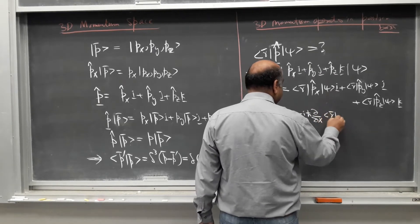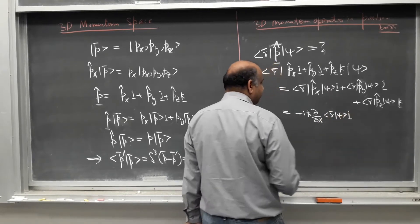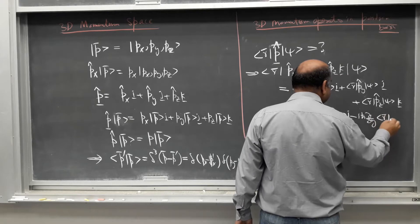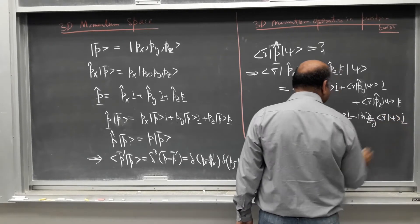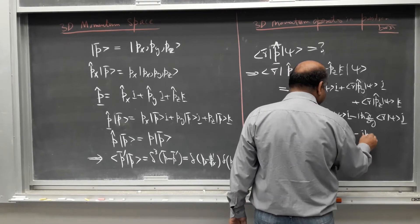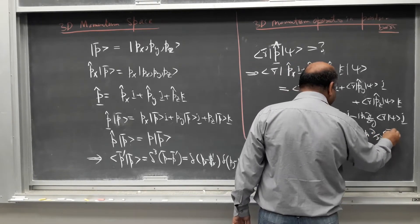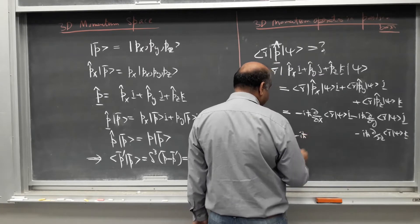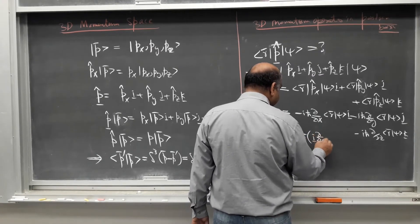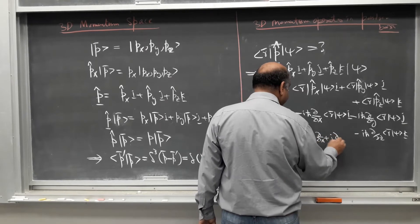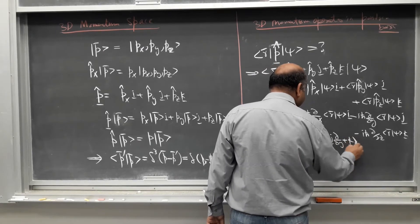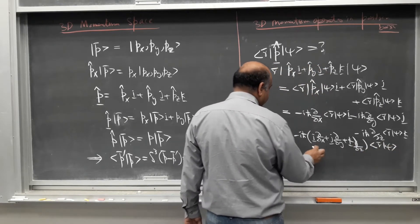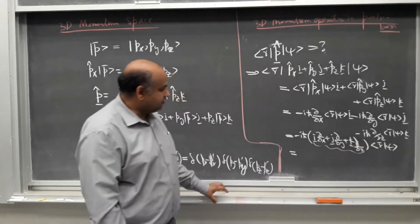So we have −iℏ ∂/∂x operating on |ψ⟩ along the x̂ unit vector, and similarly −iℏ ∂/∂y along ŷ, and −iℏ ∂/∂z along ẑ operating on |ψ⟩. We can factor out −iℏ and write the combined expression as −iℏ times (x̂ ∂/∂x + ŷ ∂/∂y + ẑ ∂/∂z) operating on |ψ⟩ in position basis. We have a special symbol for this combined vector operator.